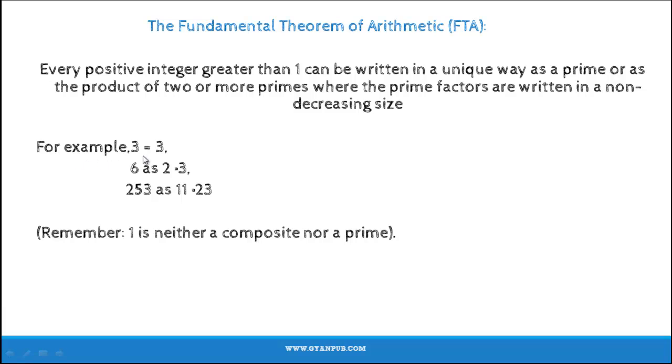For example, consider 3. 3 is a prime number, so it is written as 3 itself. Consider 6. 6 is written as 2 times 3, i.e., 6 is written as the product of 2 prime numbers.